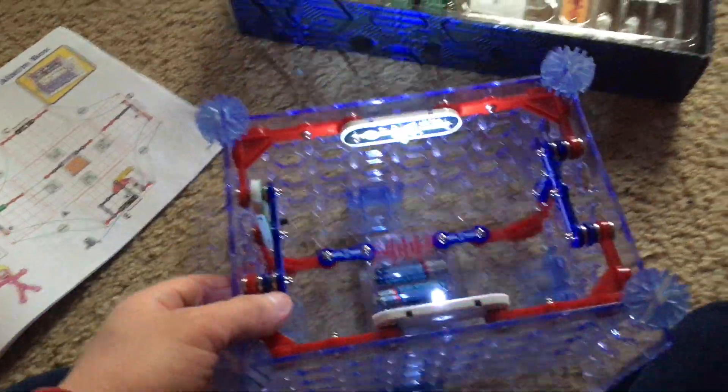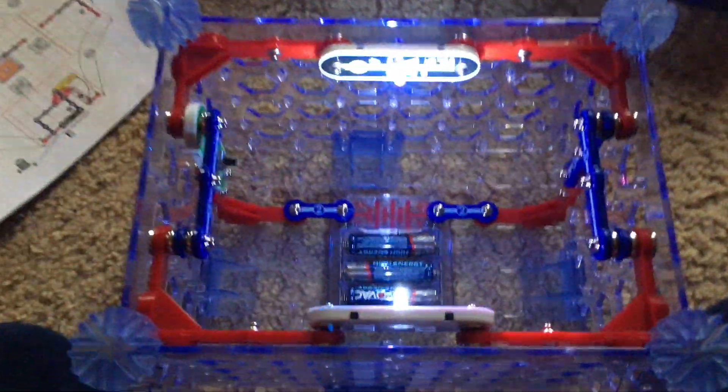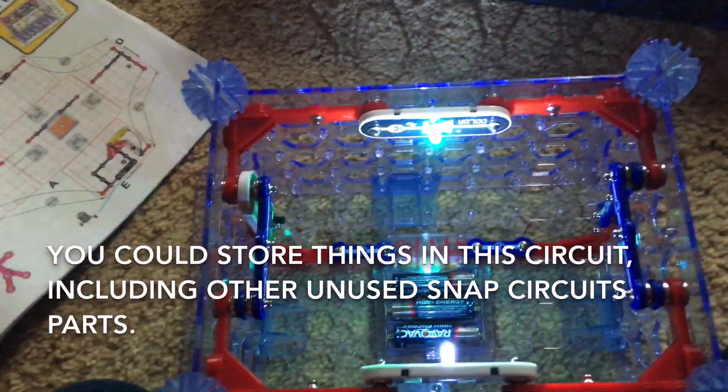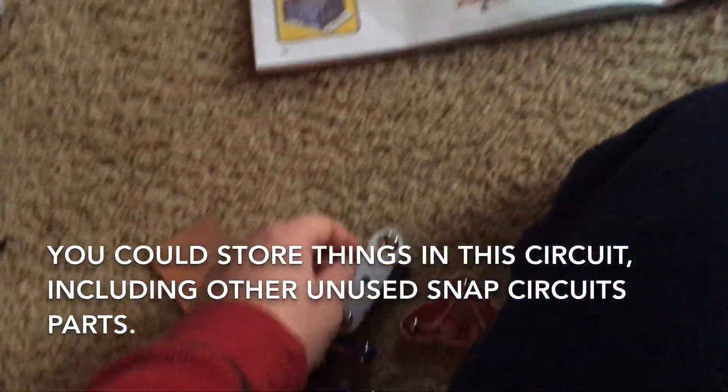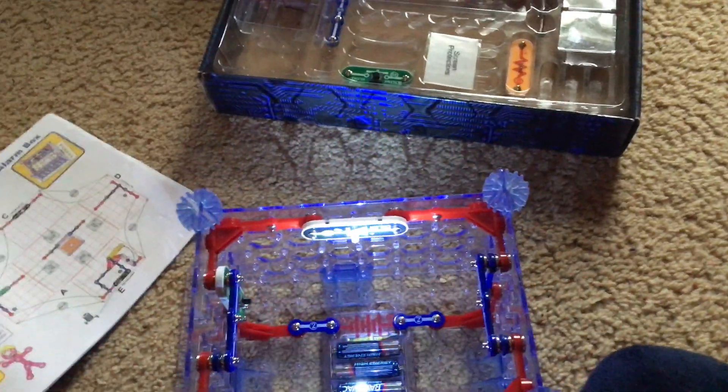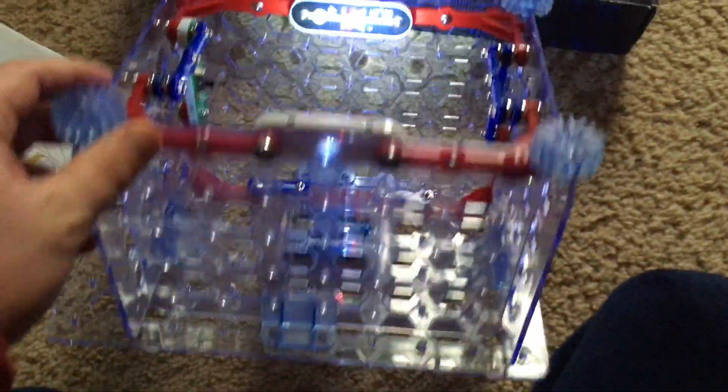Although the circuit looks complicated, its principle is very simple. There are just two LEDs that come on, but you could use this circuit to hold the remaining parts of your Snap Circuits 3D Illumination kit if you don't plan on using them for a while. You can store them in a very fancy way.